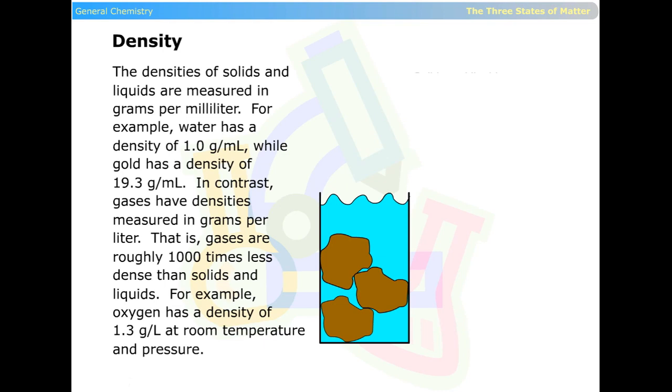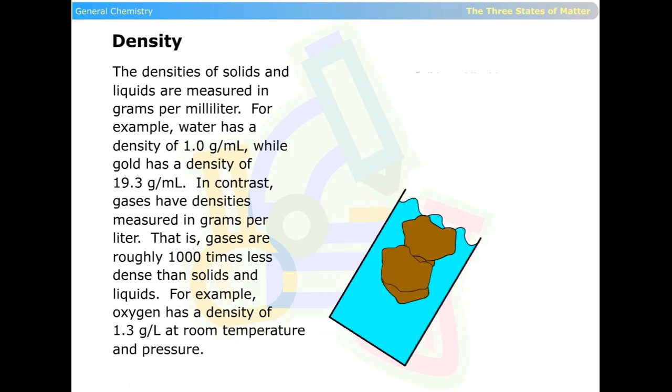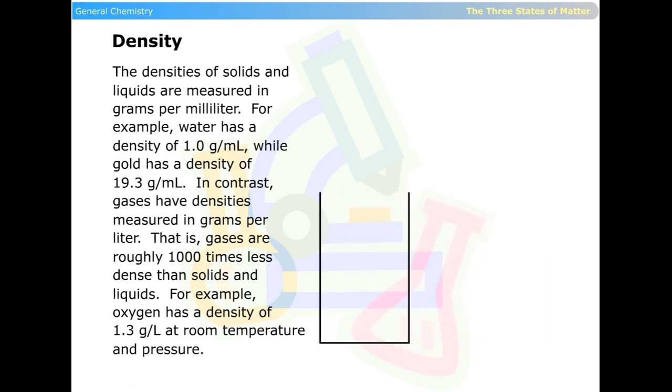In contrast, gases have densities measured in grams per milliliter. That is, gases are roughly 1,000 times less dense than solids and liquids. For example, oxygen has a density of 1.3 grams per milliliter at room temperature and pressure. Solids and liquids are more dense than gases, so they will fall through gases.